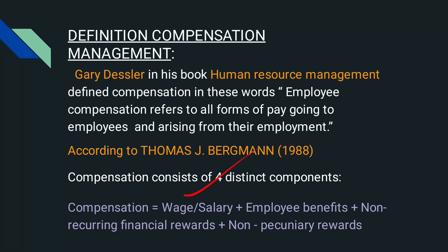Let's see what is meant by each component. Wage or salary: wage means weekly or daily pay, while salary is the monthly pay — that is the minimum pay we get for our work under contract.